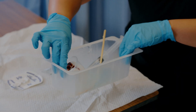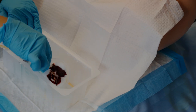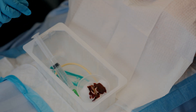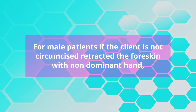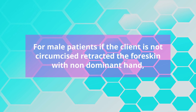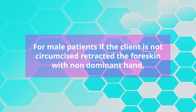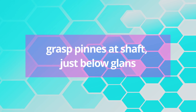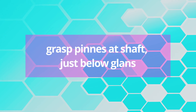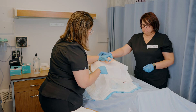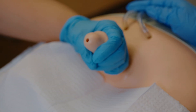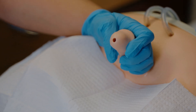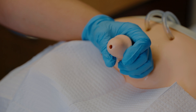Place the sterile tray and contents on the sterile drape and open the specimen container. For male patients, if the client is not circumcised, retract the foreskin with the non-dominant hand, grasp the penis at the shaft just below the glans, retract the urethral meatus between thumb and forefinger, and maintain the non-dominant hand in this position throughout the procedure.